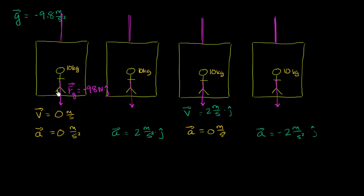In the first situation, the person has no acceleration. By Newton's first law, if there's no acceleration, there's no net force. But there must be a force counteracting gravity, otherwise there would be a net downward force and the toddler would plummet to the center of the earth. That force is the elevator floor supporting the toddler — the normal force — equal and opposite to gravity: 98 newtons in the j direction.